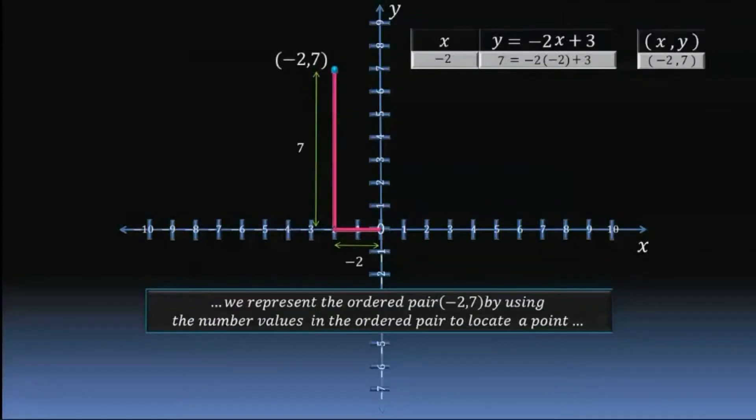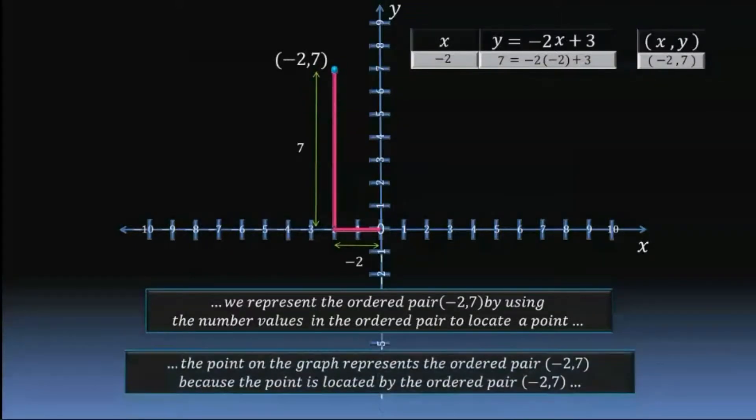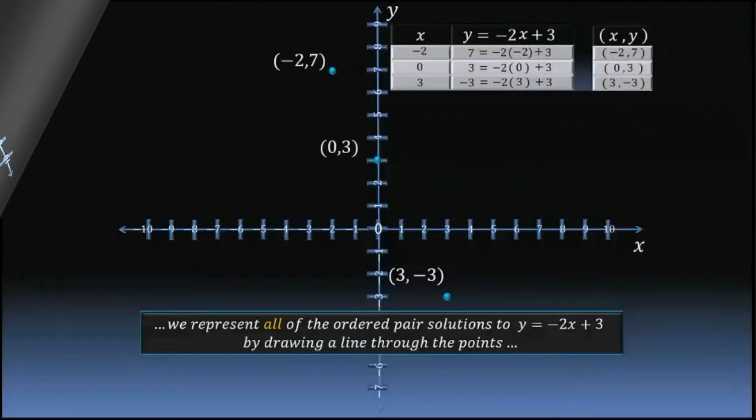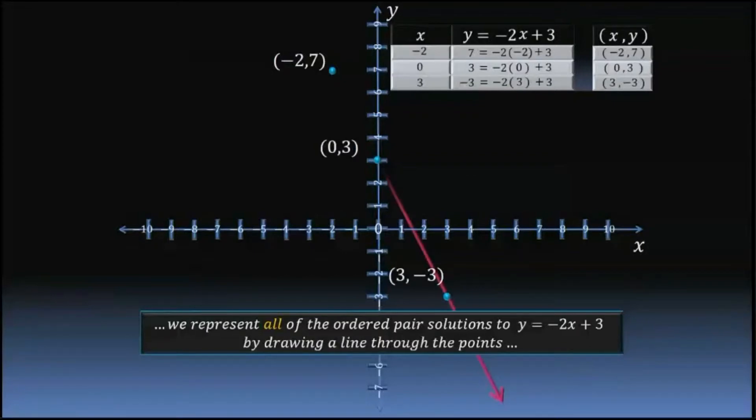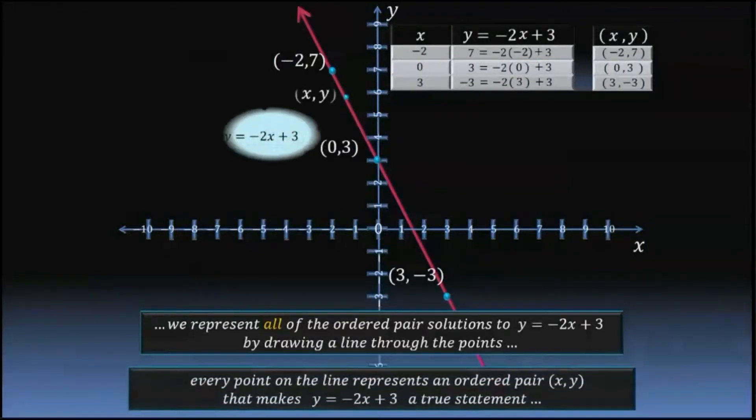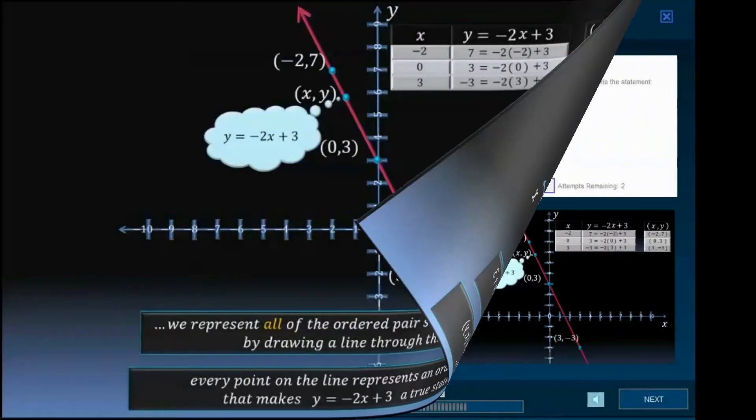That point represents the ordered pair negative 2, 7, because the point is located by the ordered pair negative 2, 7. By drawing a line through the points. Every point on the line represents an ordered pair x, y, that makes y equals negative 2x plus 3 a true statement.